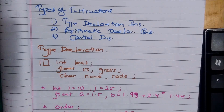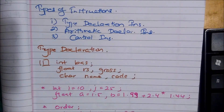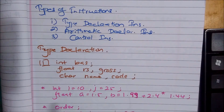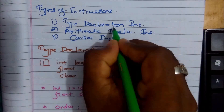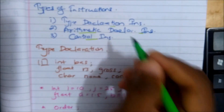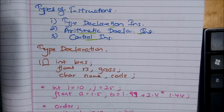Welcome to Twins Music YouTube Channel. This is a C Programming Tutorial video on types of instructions: Type Declaration Instruction, Arithmetic Instruction, and Control Instruction. This is a video of Vivid Concepts.